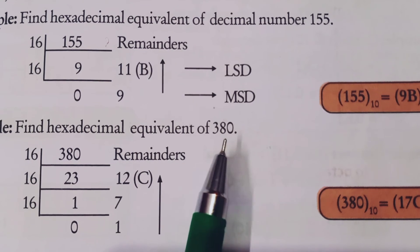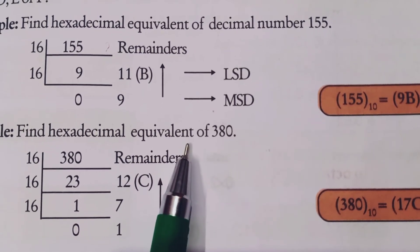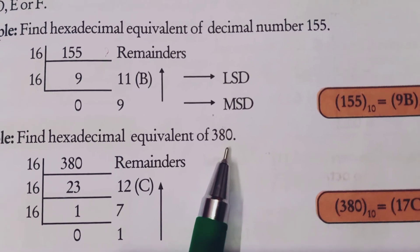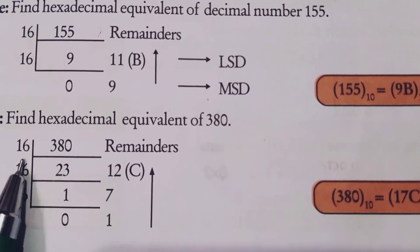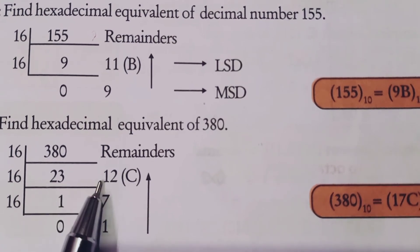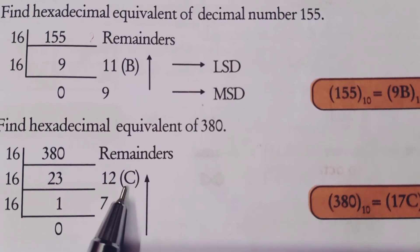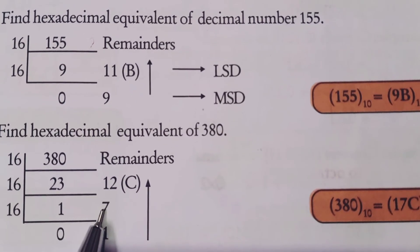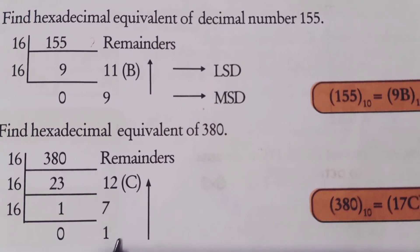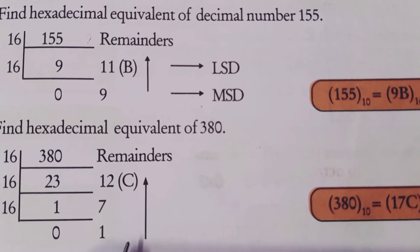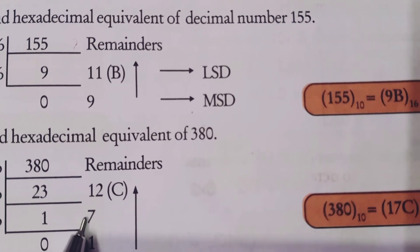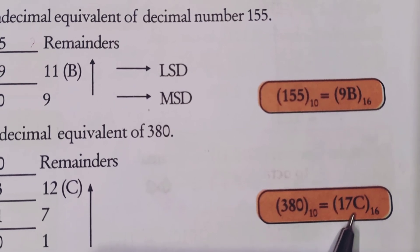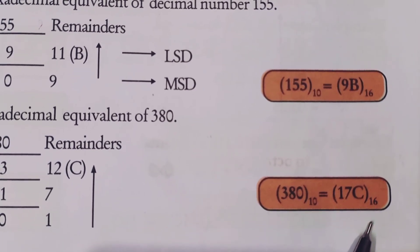Next question: find the hexadecimal equivalent of 380. 380 divided by 16 gives 23 with remainder 12. Since 12 is represented as C in hexadecimal, we write C. Then 23 divided by 16 gives 1 with remainder 7. Then 1 divided by 16 gives 0 with remainder 1. Reading bottom to top: 1, 7, C. The answer is 380 base 10 equals 17C base 16.